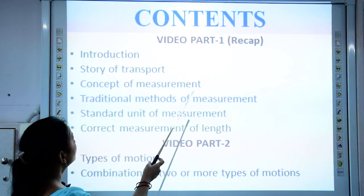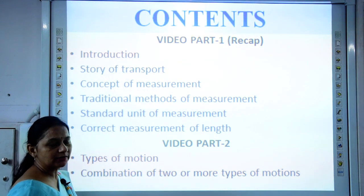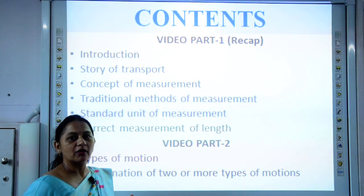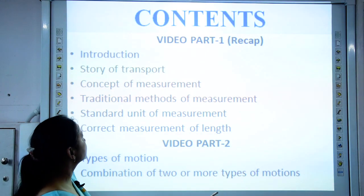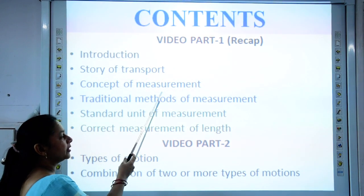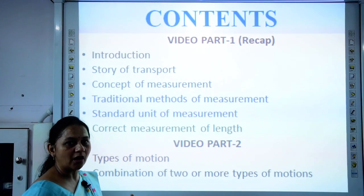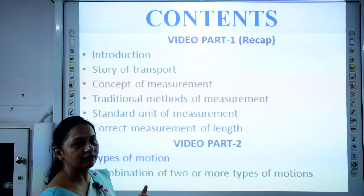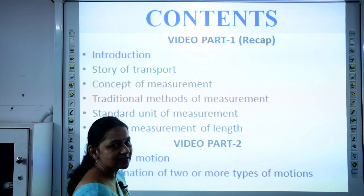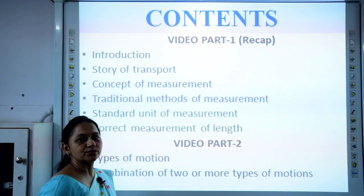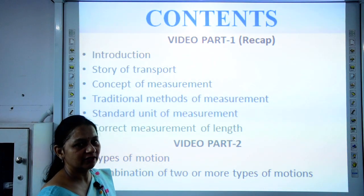In our previous video, we did the introduction and story of transport — that is, how the evolution of the vehicles we use today came into existence. We also covered the concept of measurement, what is the need for measurement, and how our daily life activities gave rise to measurement. Traditional methods of measurement such as Hand Span, Cubit, and Fathom were also discussed.